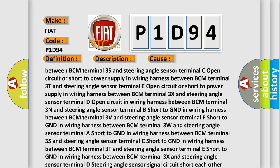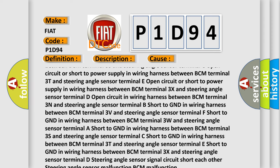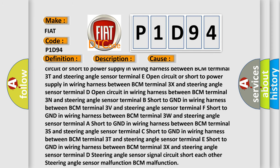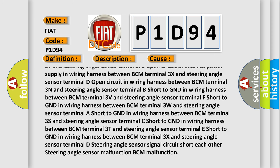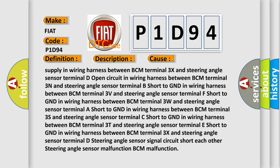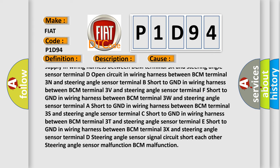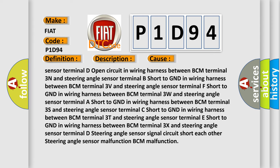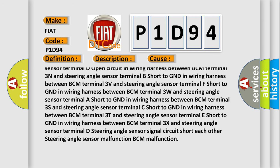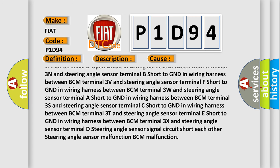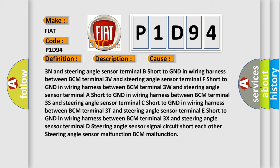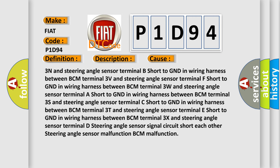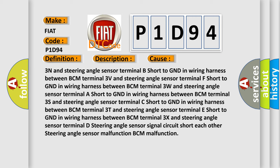Open circuit or short to power supply in wiring harness between BCM terminal 3X and steering angle sensor terminal D; open circuit in wiring harness between BCM terminal 3N and steering angle sensor terminal B; short to GND between BCM terminal 3V and terminal F; short to GND between BCM terminal 3W and terminal A; short to GND between BCM terminal 3S and terminal C; short to GND between BCM terminal 3T and terminal E; short to GND between BCM terminal 3X and terminal D; steering angle sensor signal circuit short to each other; steering angle sensor malfunction; BCM malfunction.